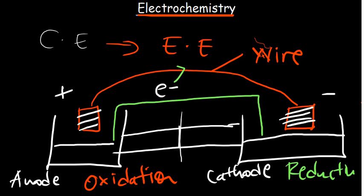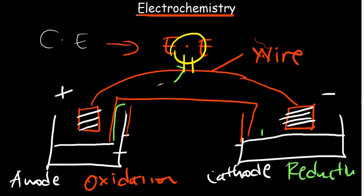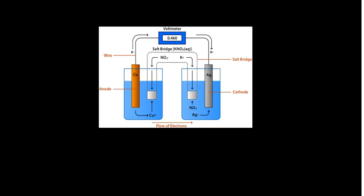If a bulb is placed in the circuit, it may light up briefly and then go off because electrons become depleted on one side when there is no salt bridge to balance the charges. With a salt bridge, the charges are continuously balanced, allowing electrons to keep flowing from the anode to the cathode, and the bulb stays on. The salt bridge contains a salt — an electrolyte.